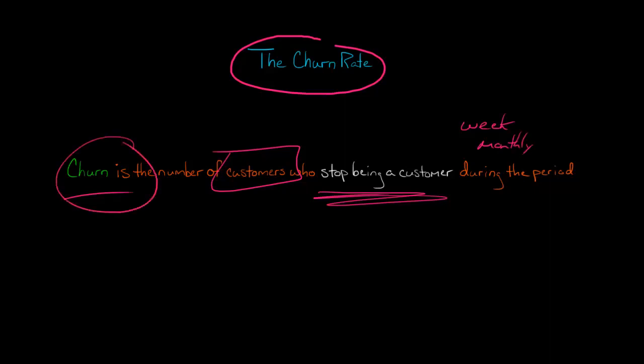Companies monitor churn very closely because it's an indicator of customer satisfaction. If you see that the churn rate is going up over time, that suggests people are unhappy. You have to ask why are so many customers dropping our product or service?